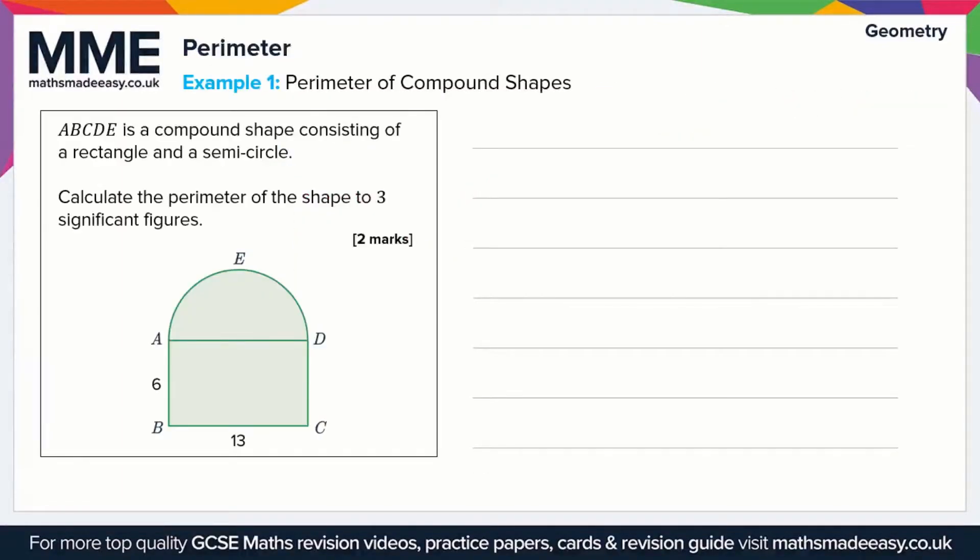Moving on, we have another compound shape this time. It's slightly trickier because we have to deal with this semicircle. We need to work out the distance around the edge of it. Let's read the question. ABCDE is a compound shape consisting of a rectangle and a semicircle. Calculate the perimeter of the shape to three significant figures. It sounds like we're going to need to use the calculator here.